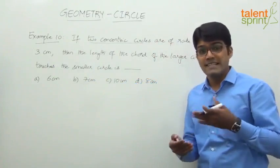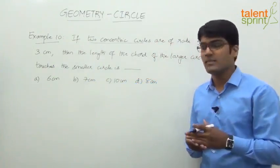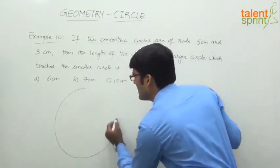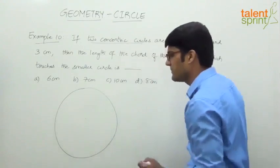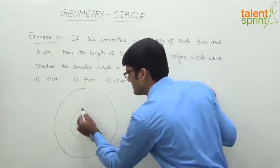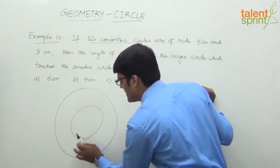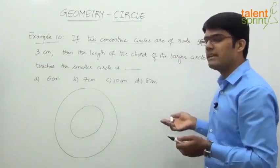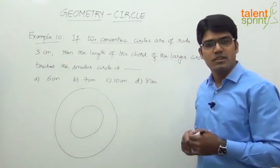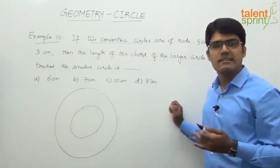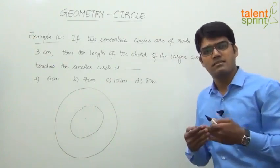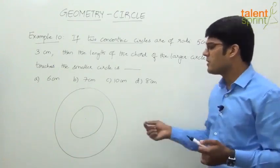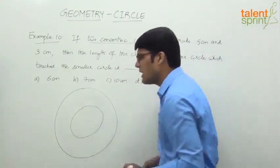What do we mean by two concentric circles? Their centers are the same — for two circles, the centers are the same. The radii are 5 centimeters and 3 centimeters. Let's understand the figure: this is a larger circle with a center, and there's a smaller circle within it. Concentric circles means circles with a common center. The radii are 3 centimeters and 5 centimeters.